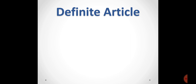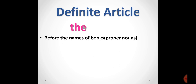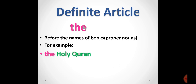Then is the definite article — 'the.' We use 'the' before the name of any book. As we know, the name of any book is always a proper noun. So if there is the name of any book, particularly the name of any book, we always use 'the' before that book. For example, the Holy Quran — Holy Quran is the sacred book of Muslims and it is a proper noun, so we always use 'the' before Holy Quran.